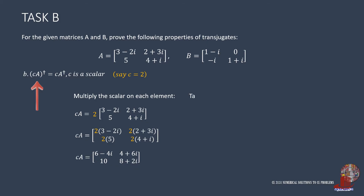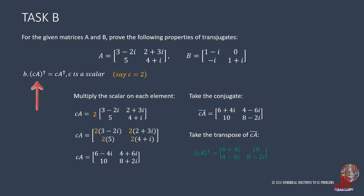After knowing CA, take its conjugate as the first step to finding its transjugate. Bar(CA) has element 1,1 as 6 plus 4i; element 2,1 is still 10; element 1,2 has 4 minus 6i; and element 2,2 has 8 minus 2i. Then solve for the transpose of bar(CA) to get its transjugate. The diagonal elements remain on their original locations, but other elements switch places such as 4 minus 6i and 10.